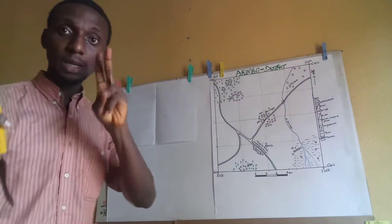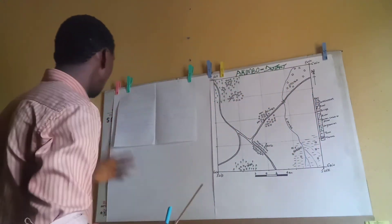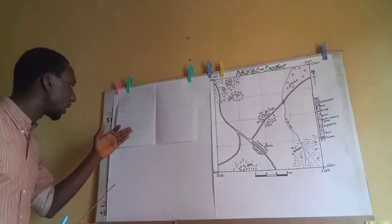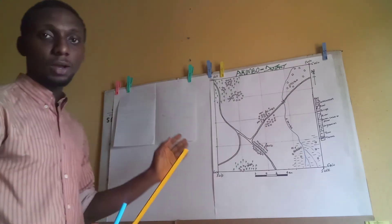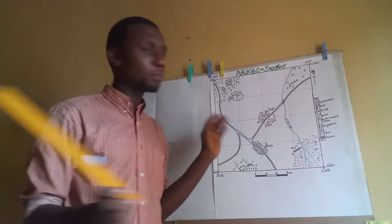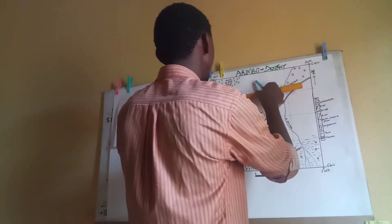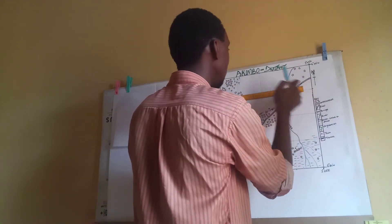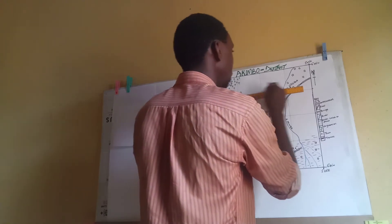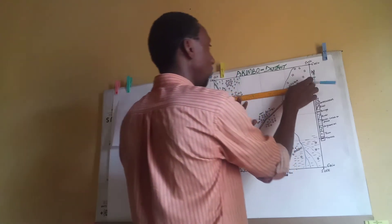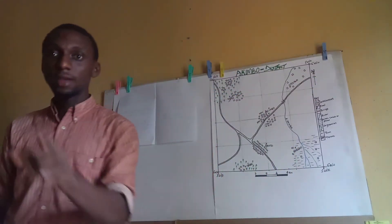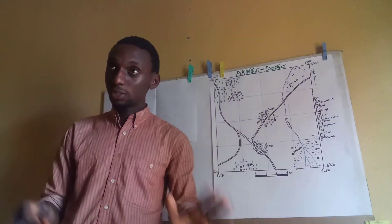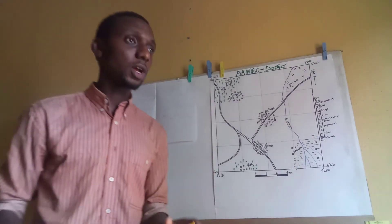Step number three: draw a straight line linking both towns. Simply take your ruler, place it on Dengue, align it to Kasala, and draw out a straight line. Have you done that? Everybody on the same page? Good.